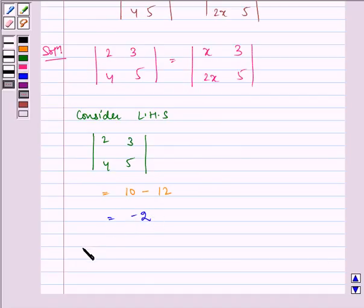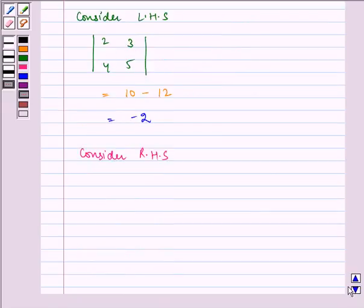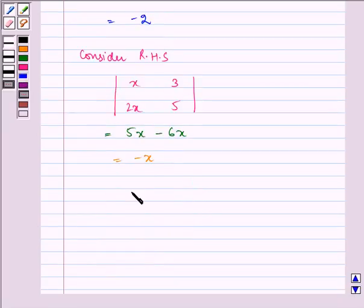Now consider determinant on right hand side which is x, 3, 2x, 5 which I am solving will give 5x minus 6x which is equal to minus x. Now equating LHS is equal to RHS.